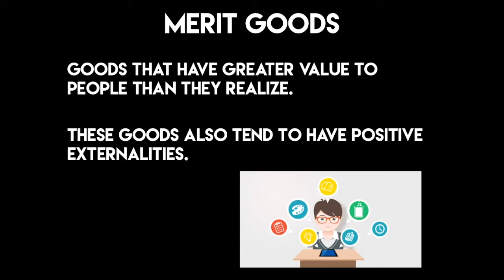I'll explain externalities a little bit later in this video, but I want to draw your attention to the fact that they have this positive benefit to people who didn't necessarily consume the education. What that means is, arguably, people who go to school tend to be more productive members of society, and with higher levels of education, arguably, the likelihood of committing crime is decreased, or so the argument goes. So merit goods have these positive spillover effects and have more value to people than they realize.